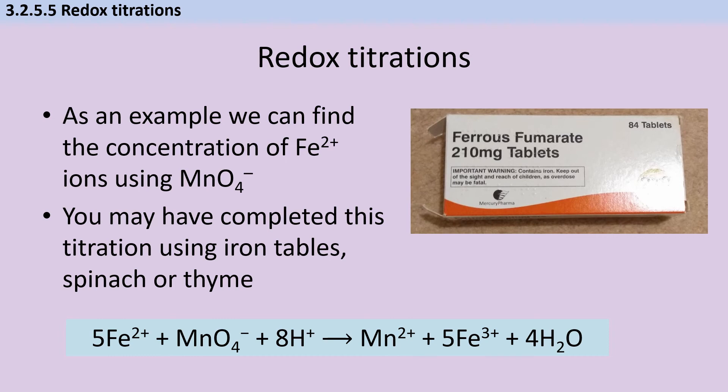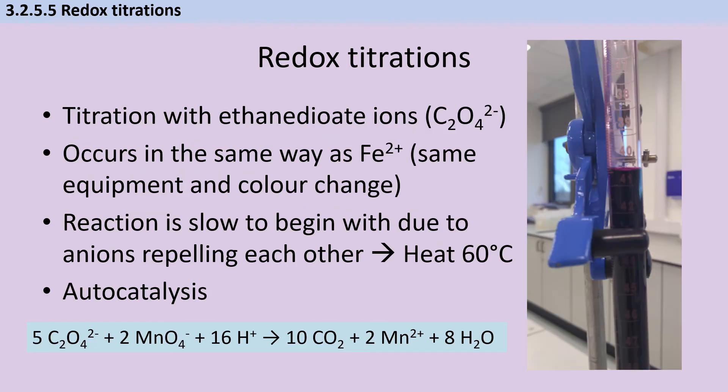Manganate ions are regularly used to identify the concentration of iron in products such as iron tablets, but also vegetables like spinach or thyme. We can also use manganate ions to identify the concentration of ethane dioate ions. This occurs in the same way as with iron 2+, so we have that same color change where we start with a colorless solution, and when potassium permanganate is in excess it stays purple. One thing to note with this reaction is that because both the manganate ions and ethane dioate ions are negatively charged they repel each other, so the reaction is slow to begin with and has to be heated to about 60 degrees. But once it gets going, this is an autocatalytic reaction and therefore it speeds up on its own.